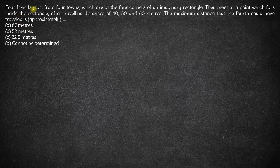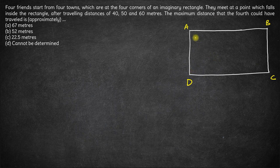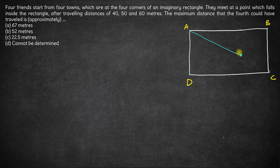Here we have four friends starting from four towns which are at four corners of an imaginary rectangle. So this is the rectangle with four corners A, B, C, D. The four friends start from these corners and meet at a point which falls inside the rectangle. Let's say all of them meet at point M.